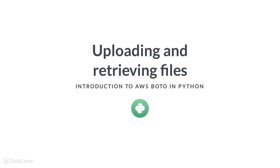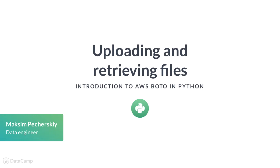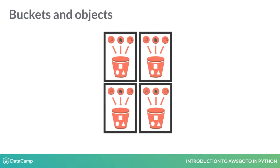In the last lesson, we learned how to list, create, and delete buckets. Now it's time to put stuff in them. Let's take a look at how objects work. The files in S3 buckets are called objects. An object can be anything: an image, a video file, CSV, or a log file. Managing objects is a key component of many data pipelines.